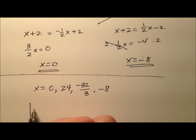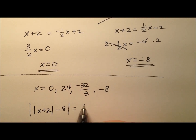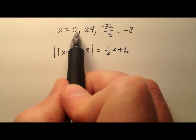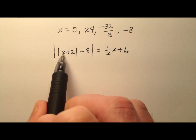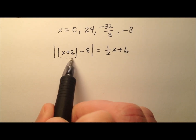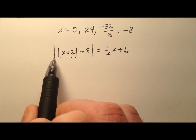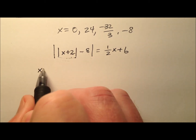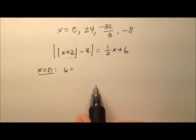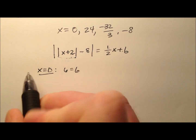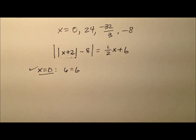Let's rewrite the original equation and check which of these work. Starting with x equals 0: 0 plus 2 is 2, the absolute value of 2 is 2, and 2 minus 8 is negative 6, whose absolute value is positive 6. On the right side, one-half times 0 is 0, plus 6 is 6. So x equals 0 works.